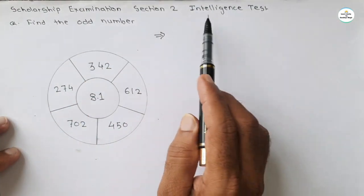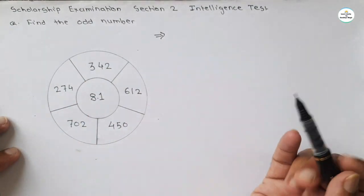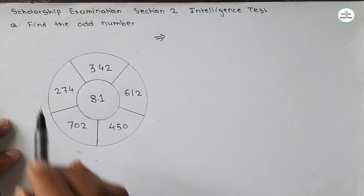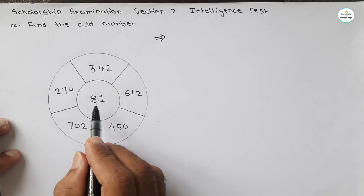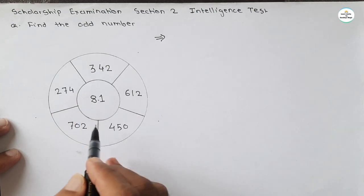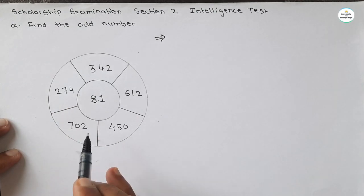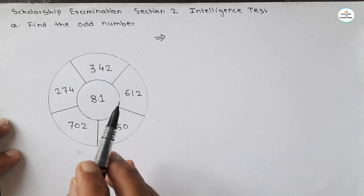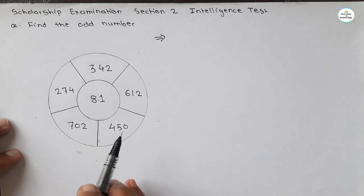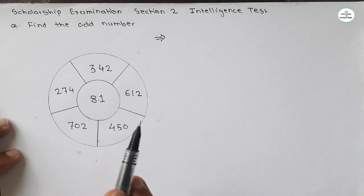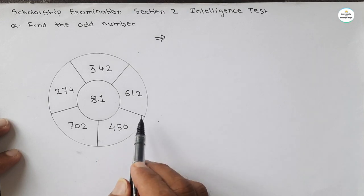Let's start our video. This question is related to scholarship examination, Section 2: Intelligence Test. The question is: find the odd number. A figure is given with a central number, and outside the circle five numbers are given. Out of the five numbers, one number is odd and we have to find it.